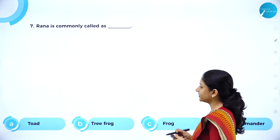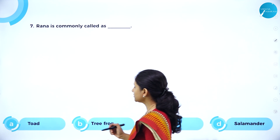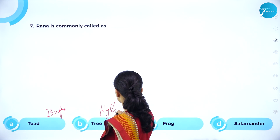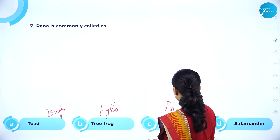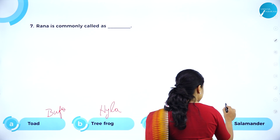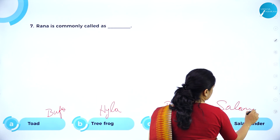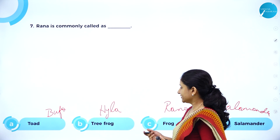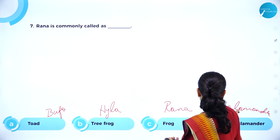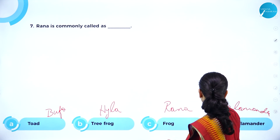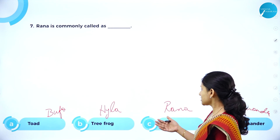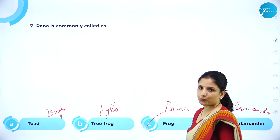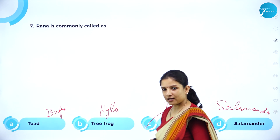Next: Rana is commonly called as toad? No — toad is Bufo. Tree frog is Hyla. Frog is Rana. Salamander is Salamandra. Questions can also be framed as: Bufo is commonly called as, or Hyla is commonly called as. Rana is the common frog we see every day, so option C — frog — is the right answer.